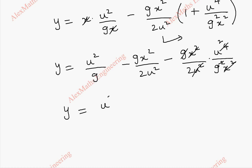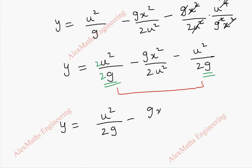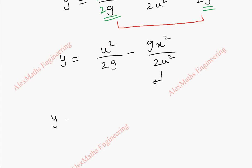So the remaining is y equals u squared by g. This second term is written as g x squared by 2u squared. The remaining terms give u squared by 2g. Combining like terms with a common denominator of 2g: 2u squared minus u squared gives u squared. So y equals u squared by 2g minus g x squared by 2u squared. Rearranging: y plus g x squared by 2u squared equals u squared by 2g. This completely eliminates the given parameter and thus gives the envelope.